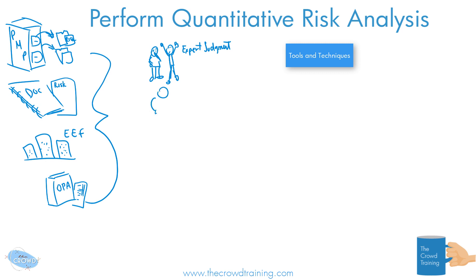We need to gather information — whether through interviewing or metrics that come in. The more information you have, the better decisions we can make and the more accurately we can quantitatively pinpoint things.